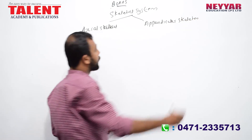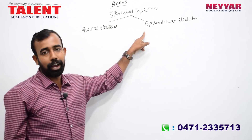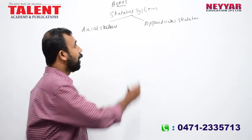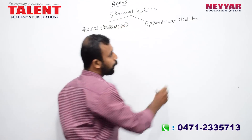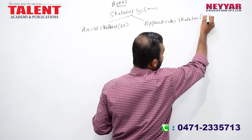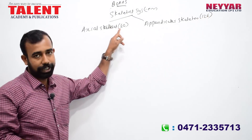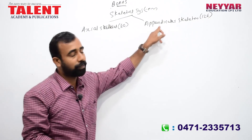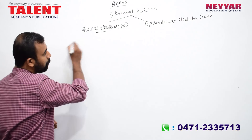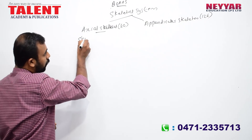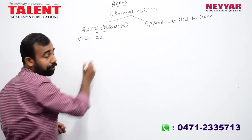The axial skeleton and the appendicular skeleton. Now in the skull, we have 22 bones. The skull has two divisions: the cranium and the face.